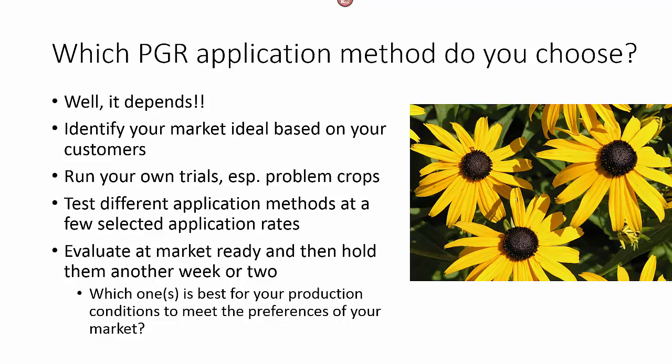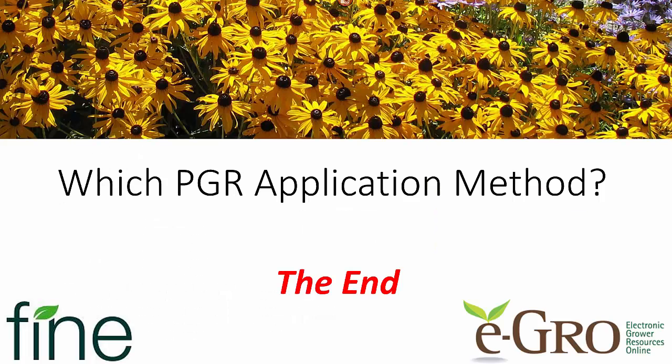Which one do you choose? It all comes down to your situation — your market, your production, and what your market ideal is for your customers. You really do need to run your own trials, especially when you talk about problem crops. Rebecca is not a problem crop; it's just a nice example. For your problem crops you really need to look at these different methods of application, test a few of them, test a few different rates at each method, and evaluate them at the time you would ship them out the door. Then hold them for another week or two and see what they look like after they've been on the shelf.